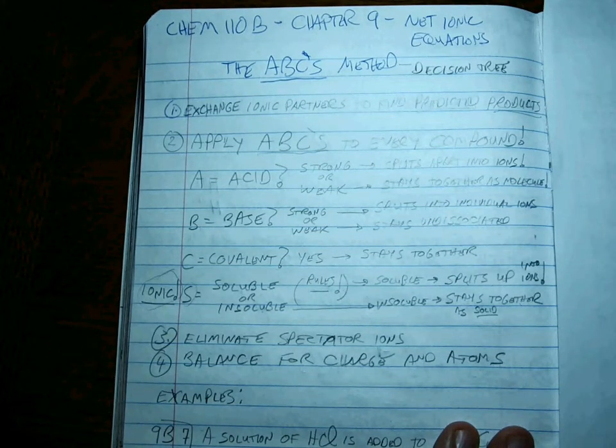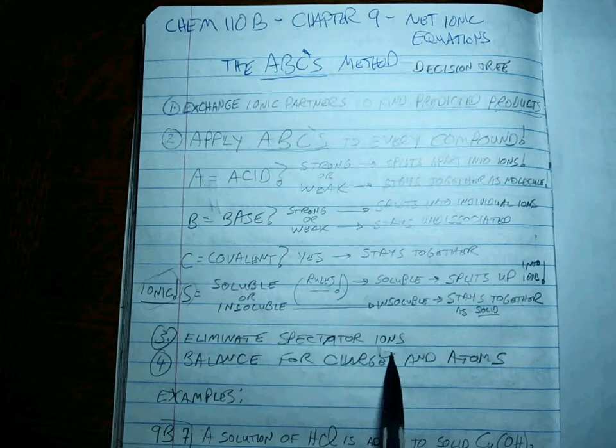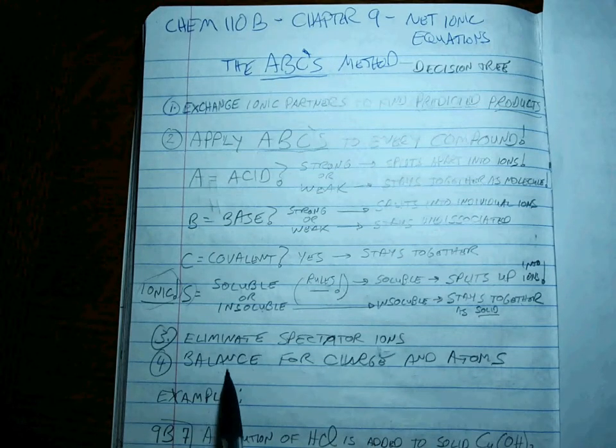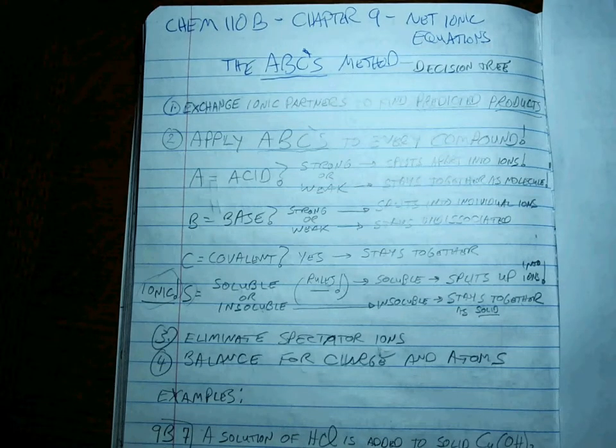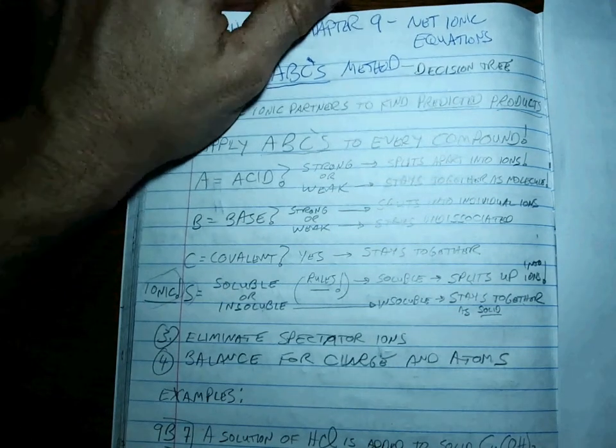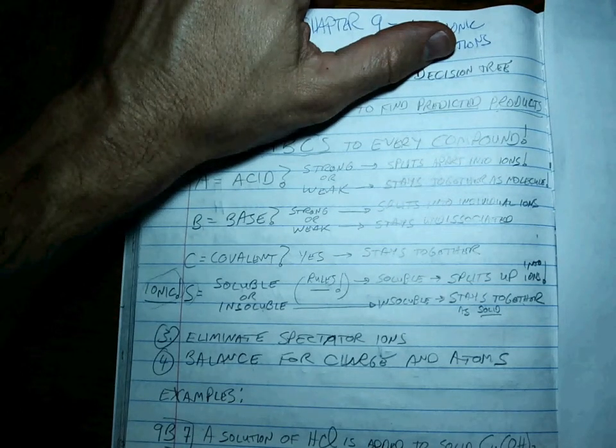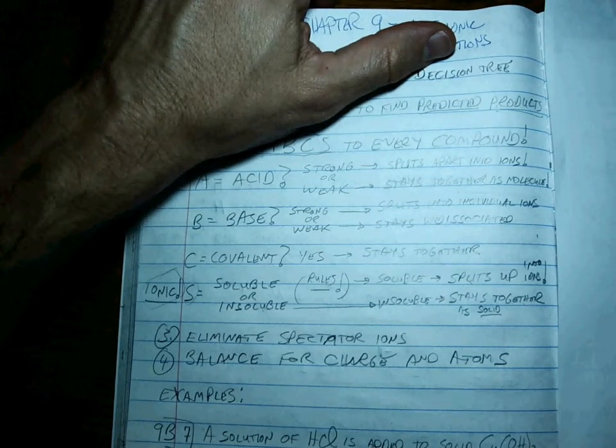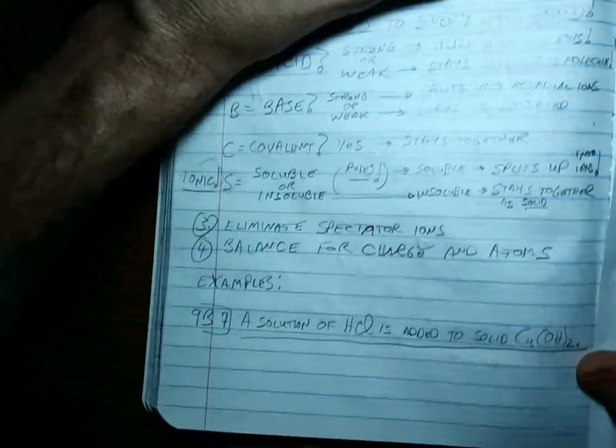After you do all of that, you go back through, and you eliminate the spectator ions that are exactly the same on both sides. And then you make sure you're balanced for charge and for atoms. That's it. So let's go through a couple of examples that are tough from 9B, like sort of 5 or 6, all the way through 11.